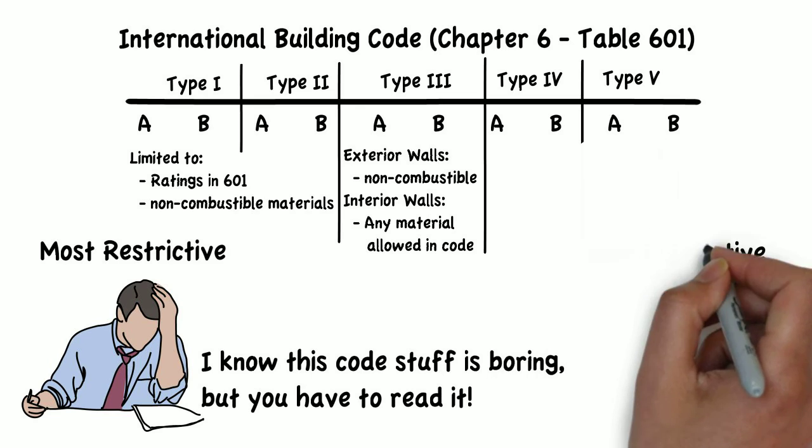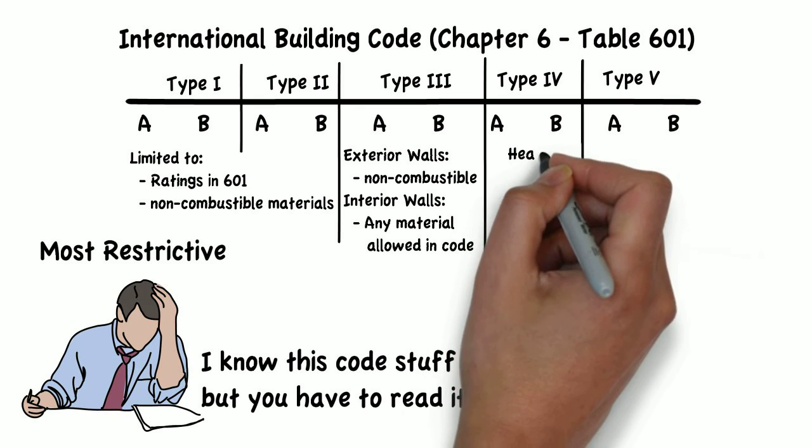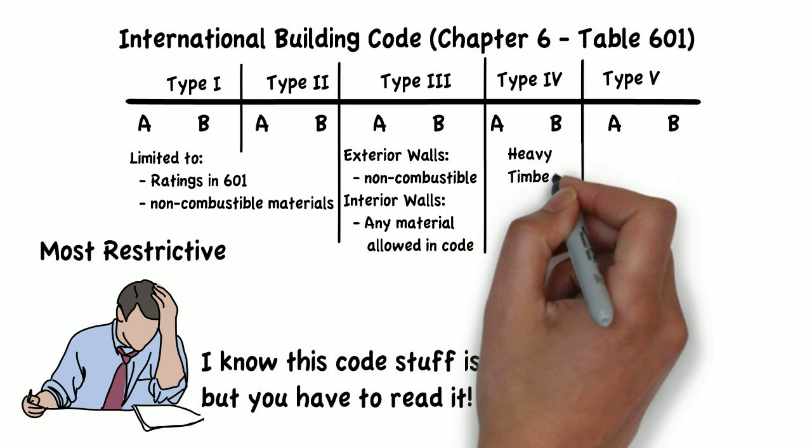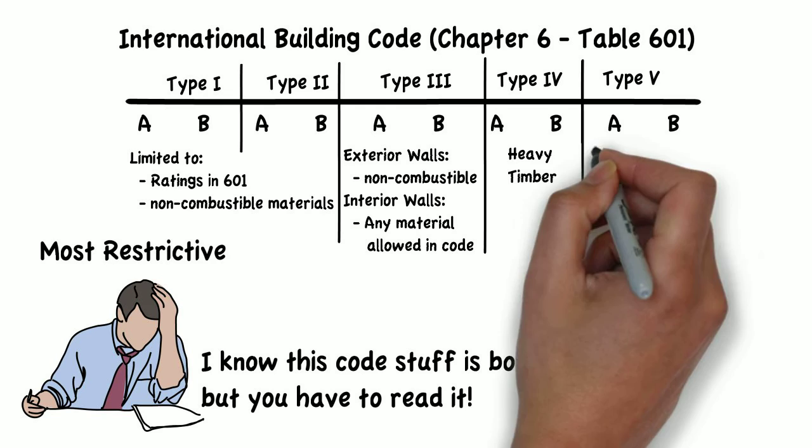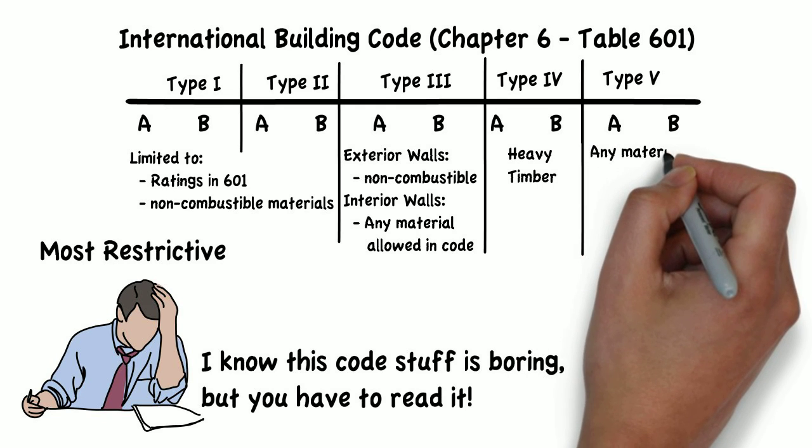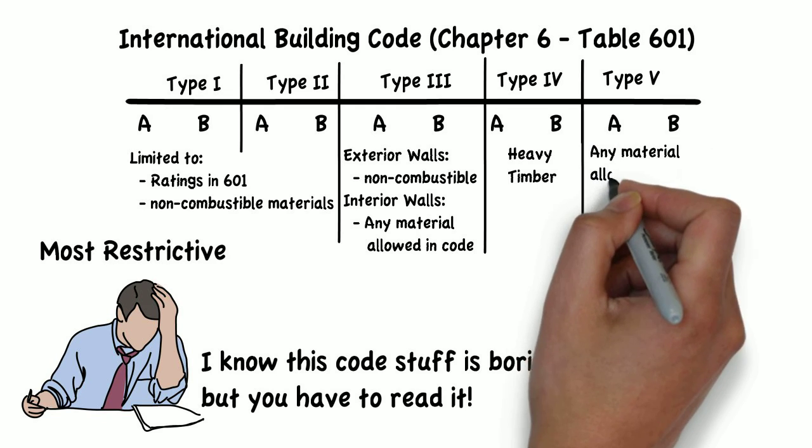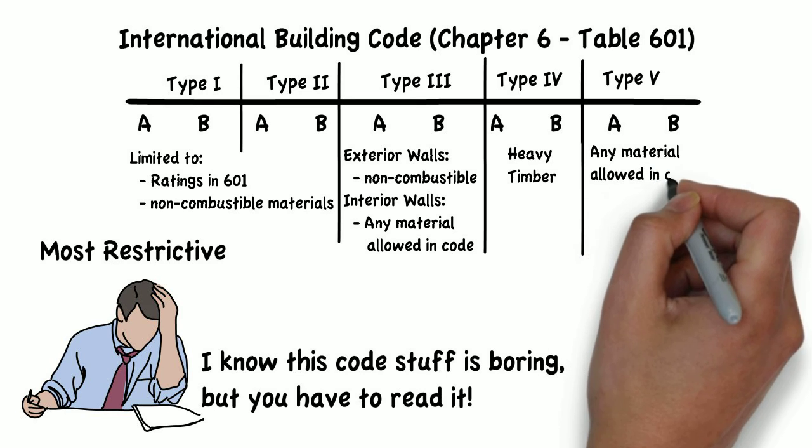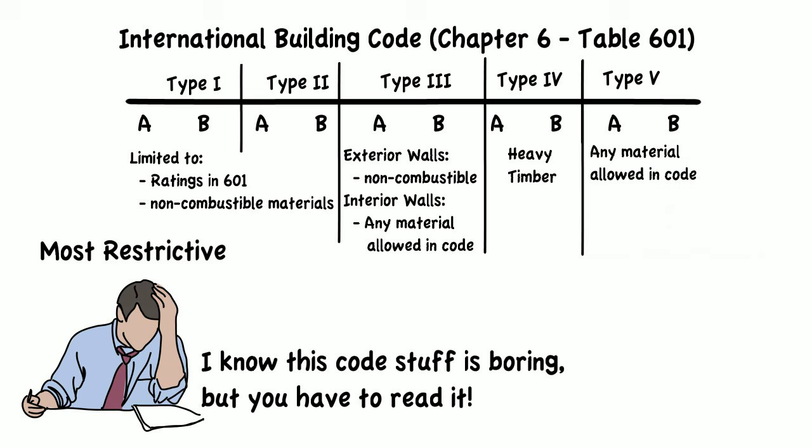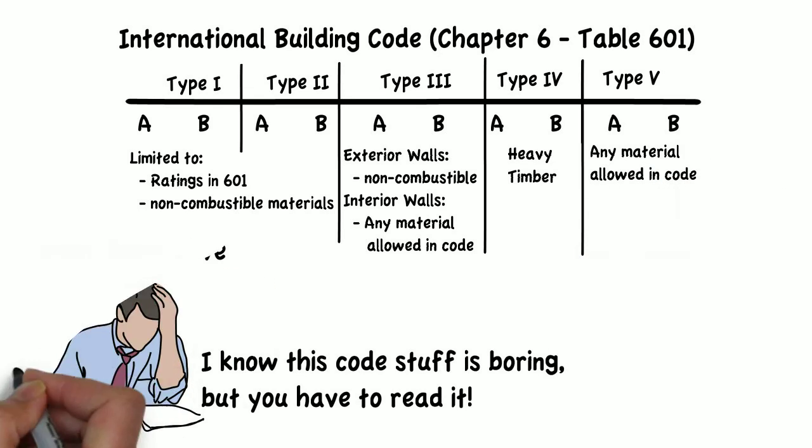IBC Section 602.4 tells us that Type 4 buildings are mainly for heavy timber construction, and IBC Section 602.5 tells us that Type 5 buildings can use any material permitted by the building code.